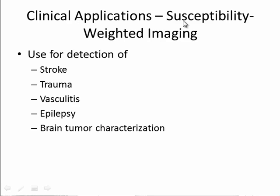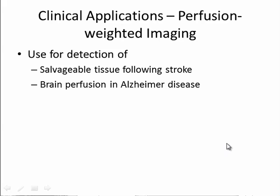Another application is susceptibility weighted imaging, another form of T2 star weighted imaging that adds more information such as the phase of the image. This is useful for detection of stroke, epilepsy, and brain tumor characterization. Perfusion weighted imaging is also very interesting — it allows you to look at blood flow near tissue after a stroke, which is important because clinicians want to know what regions of the brain still have blood flow, helping guide prognosis. This can also be used in Alzheimer's disease and other organs.